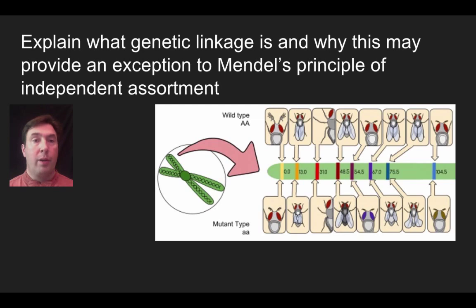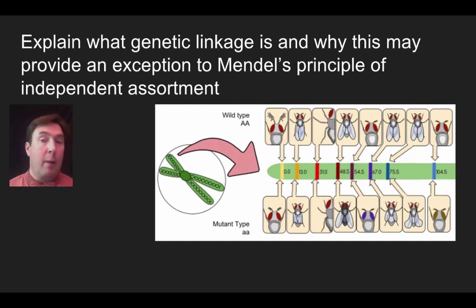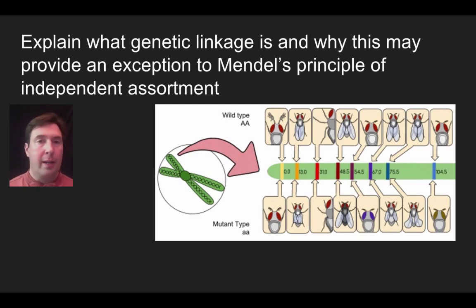The offspring would not show true independent assortment. Thinking back to our example of the nine-to-three-to-three-to-one ratio from a previous unit — you would not expect that ratio if there are linked genes. Or more appropriately, if you expect a 9:3:3:1 ratio but the offspring don't show it, one question to ask is whether these two genes are on the same chromosome and possibly linked. That's how most linked genes in our sample problems have been discovered. Not all genes behave with true independent assortment, especially if they're on the same chromosome and close together.